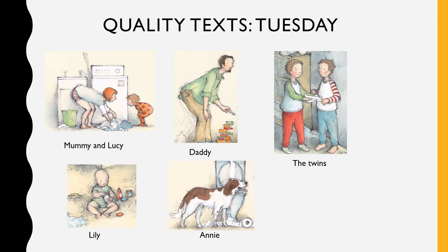Here are the characters in the book. The first characters we see were Mummy and Lucy — that's where Lucy was asking Mummy for a hug and Mummy was busy doing the washing. The next character we saw was Daddy. What was Daddy doing when Lucy wanted a hug? After Lucy walked away, it looked like Daddy was cheering for something. The next two characters are the twins. We don't learn their names in the book — they're just called the twins or the boys. Twins are babies that were born on the same day. The twins didn't really want to give Lucy a hug at first, but they did because they're her brothers.